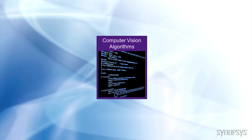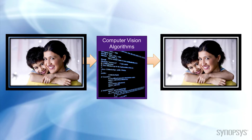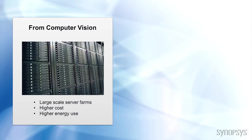Computer vision algorithms have been around for a while. They allow computers to acquire, process, analyze, or gain understanding of digital images or videos. Historically, they have been run on large, power-hungry systems or compute farms.